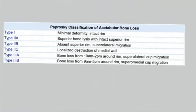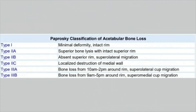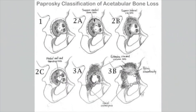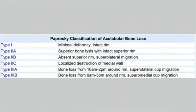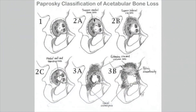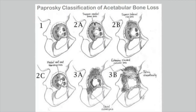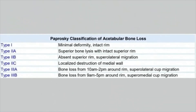In type 3a, there is bone loss from 10 o'clock to 2 o'clock position, with superolateral cup migration. In type 3b, there is bone loss from 9 o'clock to 5 o'clock around the rim. Type 3b has more chances of pelvic discontinuity because it involves quite extensive bone loss.